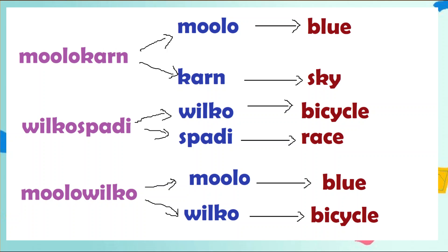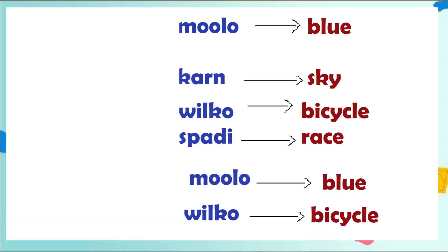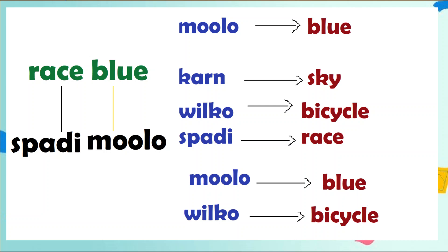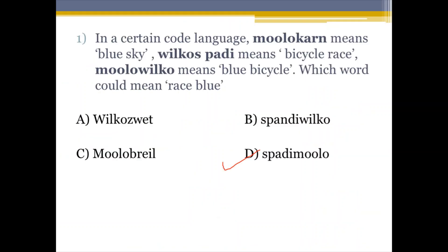So Molok means blue. What did we define for race? It was Spadi. What did we define for blue? It was Molok. So Spadi plus Molok — it will be Spadi Molok. So option D will be correct, that is Spadi Molok.